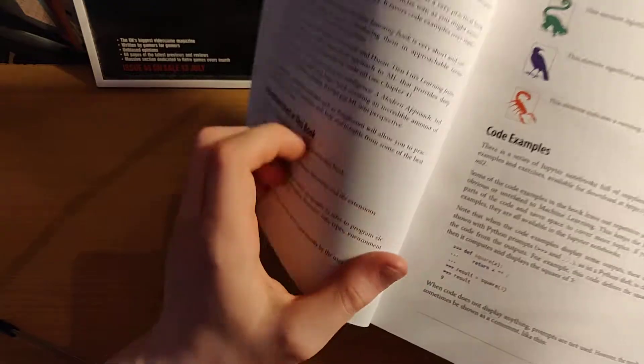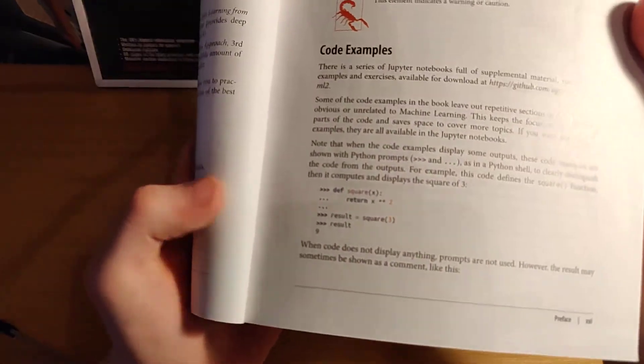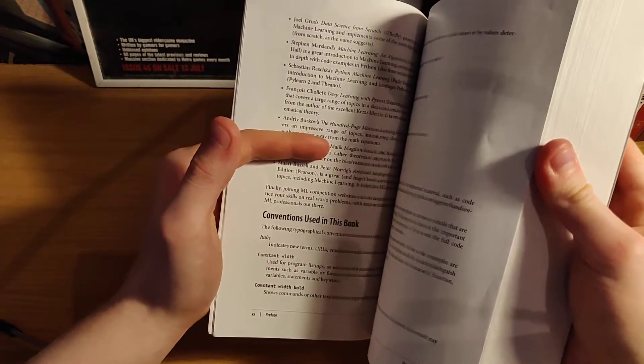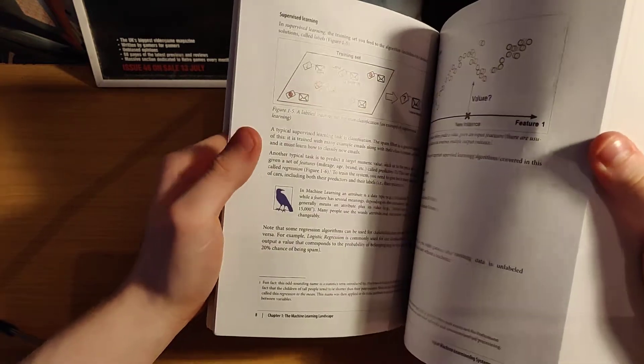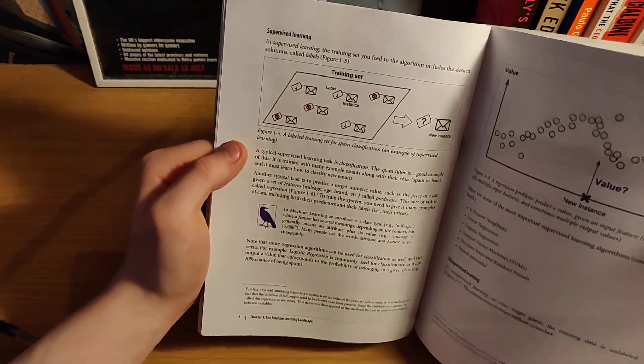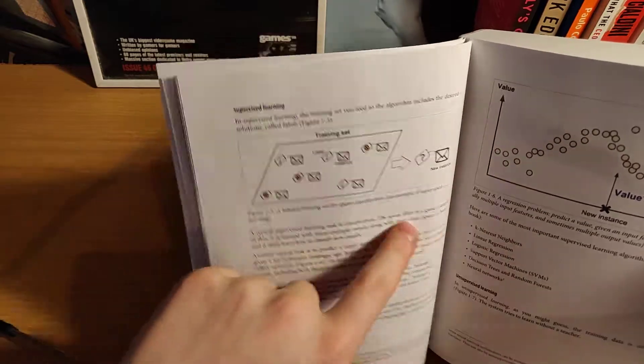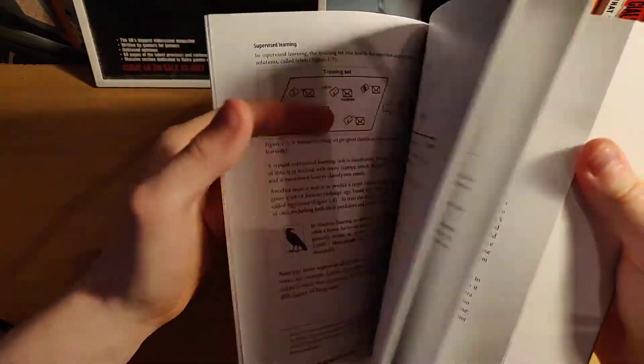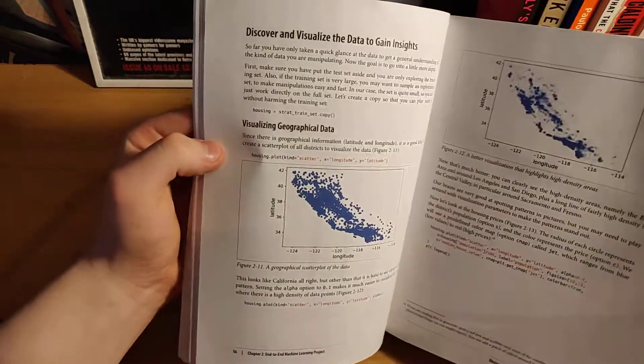So like I said, throughout the book you can find code examples which will be in the Jupyter notebook that you can find on GitHub. But then it has a lot of images, diagrams, to explain what everything is and how everything works.